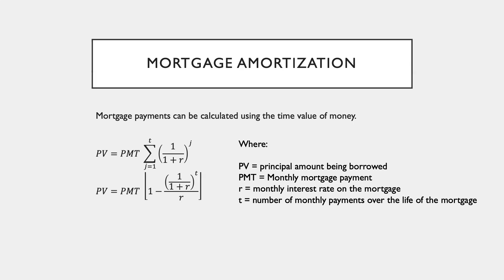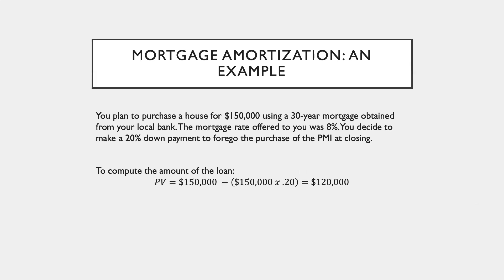Here's a quick example. You plan to purchase a house for $150,000 using a 30-year mortgage obtained from your local bank. The mortgage rate offered to you was 8%. You decide to make a 20% down payment to forego the purchase of a property mortgage insurance at closing.